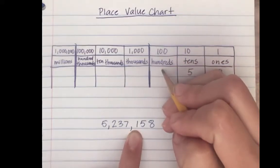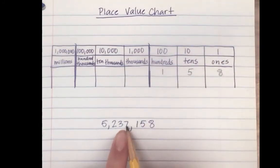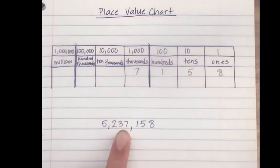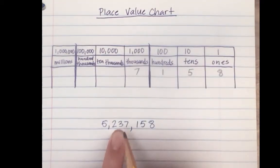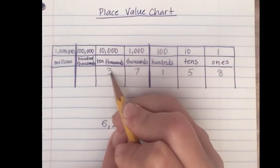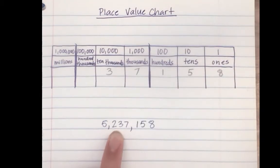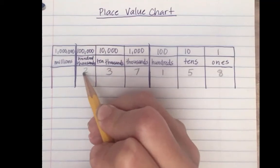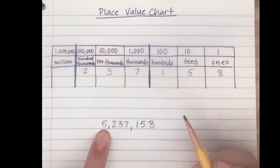The seven is in the thousands place, so it's seven thousands. The three is in the ten thousands place - three ten thousands, which is thirty thousand. The two is in the hundred thousands place, so that's worth two hundred thousand. And the five is in the millions place.